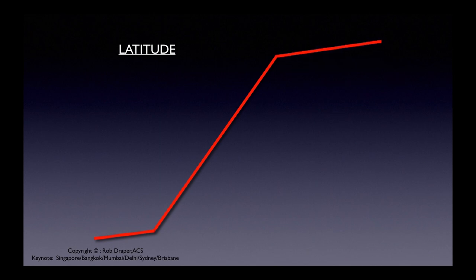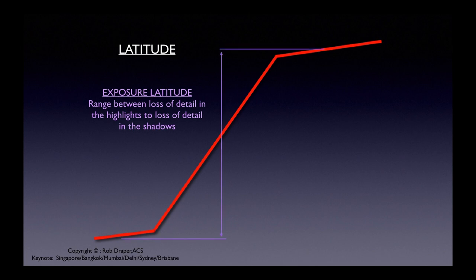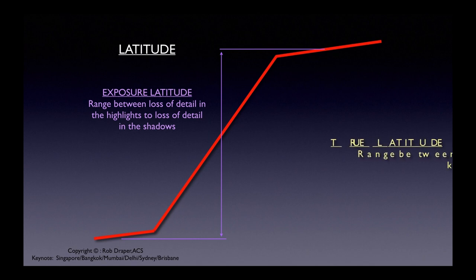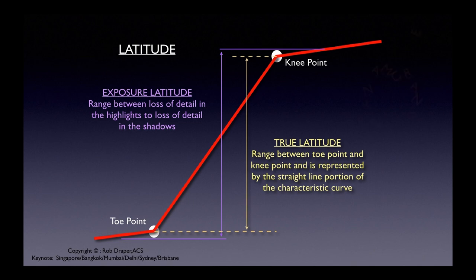Now let's look at latitude, because latitude is what we actually use in the field and what we need to light by. Latitude is very different to dynamic range and there are two types of latitude. There's exposure latitude, which measures the range between the area in the highlights where you lose detail to the area in the shadows where you lose detail — the part at the top of the curve where detail gets lost into the highlights and the part at the bottom where detail gets lost in the shadows. The true latitude is different again and measures the range between the toe point at the bottom of the curve and the knee point at the top of the curve — so the true latitude measures solely the straight-line portion of the characteristic curve.